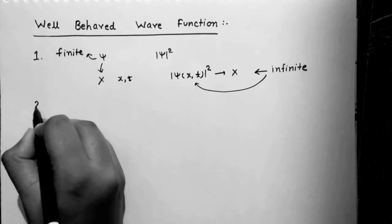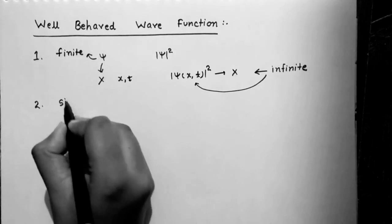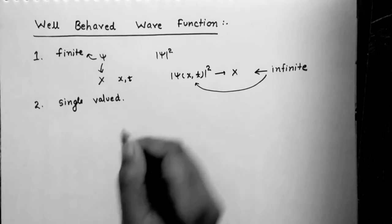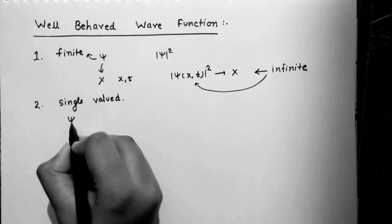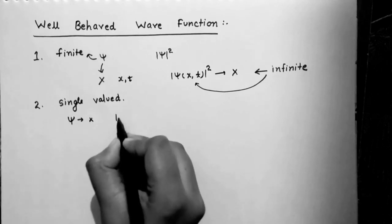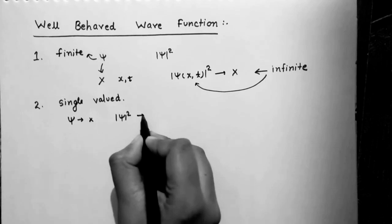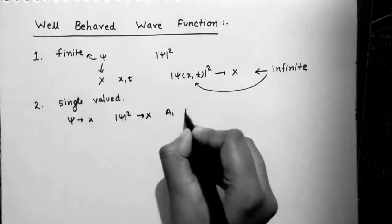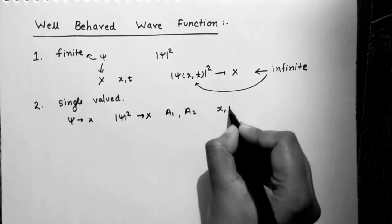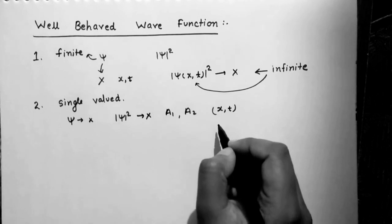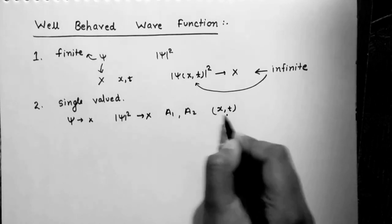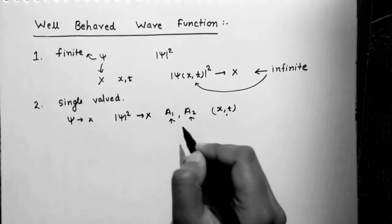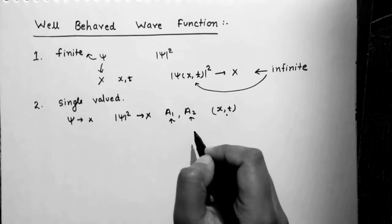The second condition is that psi must be single-valued in all space. If psi is not single-valued, then |ψ|² will also not be single-valued. If it has two values like a1 and a2 at a position x and time t, then the probability to find the particle at this position and time would also have two values — but that is not physically acceptable. How can a particle have two probabilities at the same position and same time?